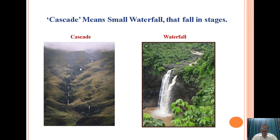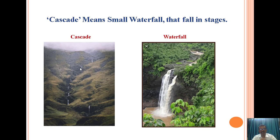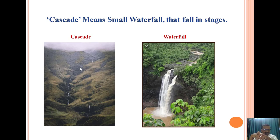Friends, basically the word 'cascade' came from the waterfall. But there is a difference between a waterfall and a cascade. In a waterfall, the water falls directly on the earth. But in a cascade, water falls on the earth slowly, step by step. GST removes the effect of cascading, that is tax on tax. Thank you, my friends, for giving me an opportunity to introduce this concept before you.